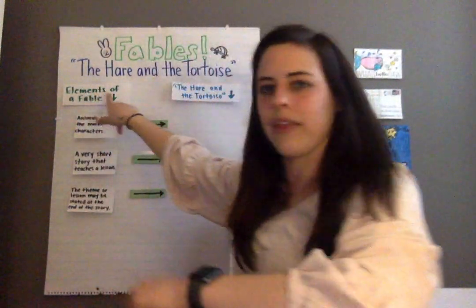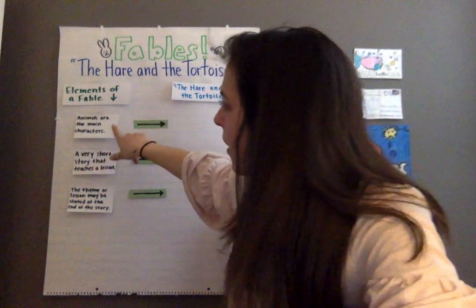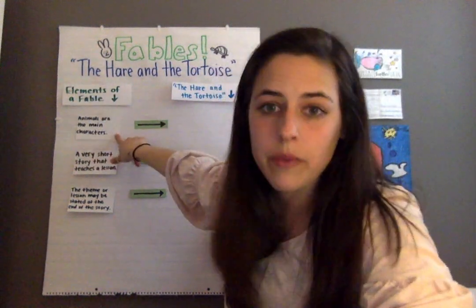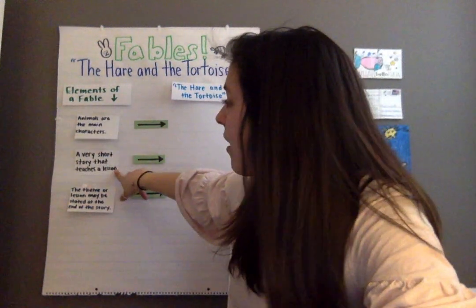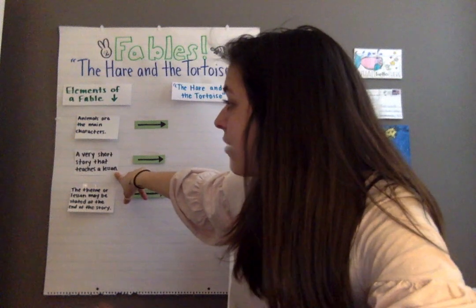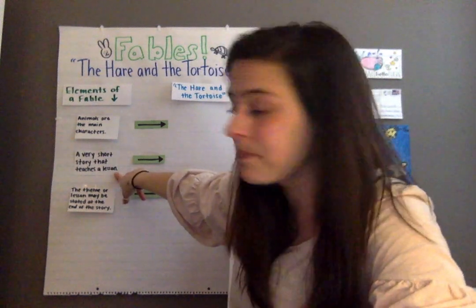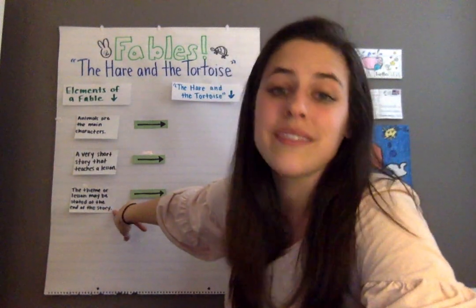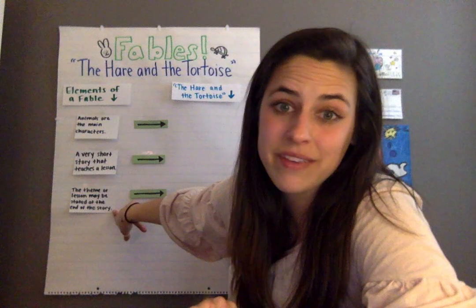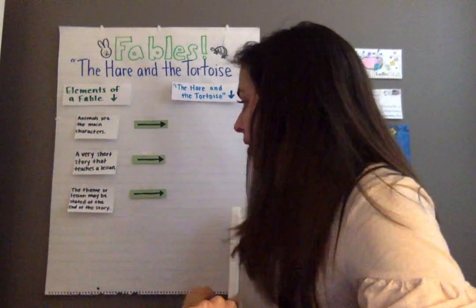So the elements of a fable are: animals are the main characters, it is a very short story that teaches a lesson, and the theme or lesson may be stated at the end of the story.